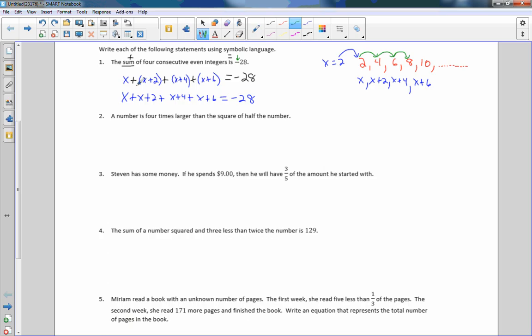Number two. A number is four times larger than the square of half the number. So first of all, let's let x be the number. So in terms of x, a number is, equal sign, four times larger. Larger meaning plus or greater than, multiplying, four times larger would be multiplying by a positive number. Four times smaller would mean to multiply by a negative number.